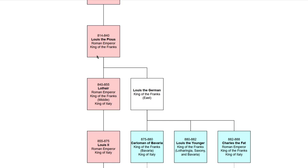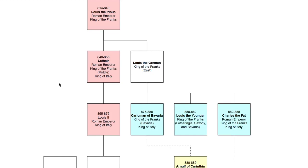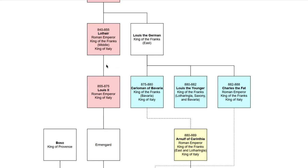Louis the Pious's primary successor out of his three sons was Lothair, who inherited the middle realm of the Franks, which included Italy, Burgundy, the core region of Austrasia, and the Frisian territory the Franks had conquered. When he died, his kingdom was divided between his sons into three pieces: Italy, Burgundy, and a realm eventually called Lotharingia — from which we get Lorraine today as a regional name.